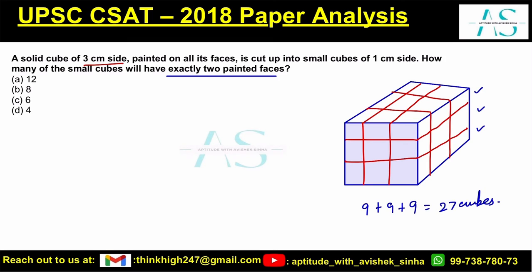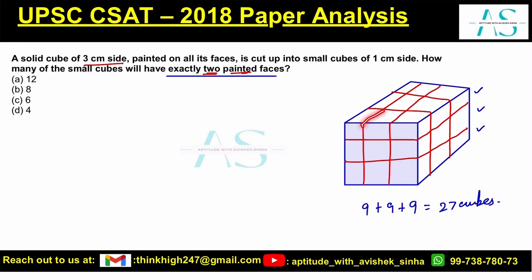How many of these have exactly 2 painted faces? All the outer faces are painted. If you look at a cube in the middle of an edge, it will only be painted on 2 sides. But the ones at the corner are painted on 3 faces — so corner cubes have 3 faces painted.